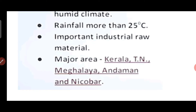The major rubber-growing areas in India include Kerala, Tamil Nadu, Meghalaya, and the Andaman and Nicobar Islands — areas where there is a lot of rainfall. In those high-rainfall areas, rubber cultivation can be very good.